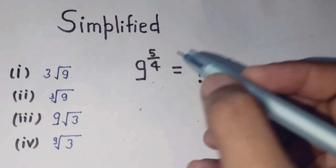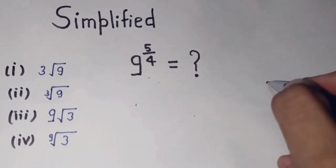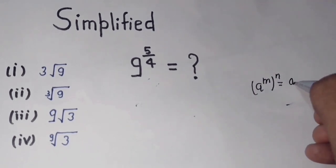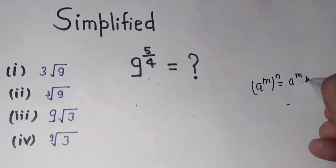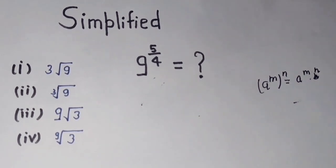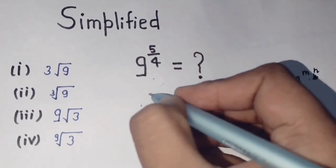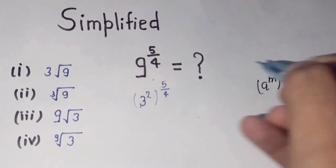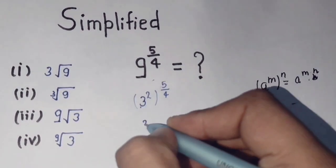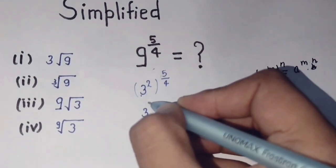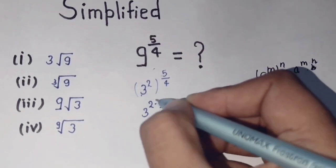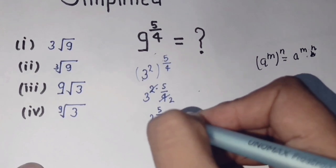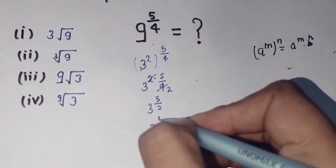I am using the exponential rule: a raised to power m over power n equals a raised to power m times n. Using this formula, I can write 9 as 3 raised to power 2, so we get 3 to the power 2 over 5 by 4. Applying the formula: 3 to the power 2 times 5 by 4 — the 2 and 4 cancel — giving 3 to the power 5 by 2.